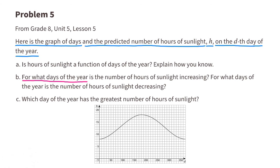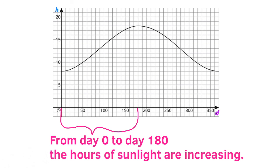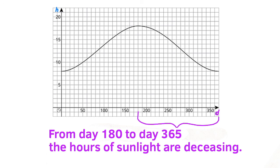B. For what days of the year is the number of hours of sunlight increasing? For what days of the year is the number of hours of sunlight decreasing? From day 0 to day 180, the hours of sunlight are increasing. And from day 180 to day 365, the hours of sunlight are decreasing.